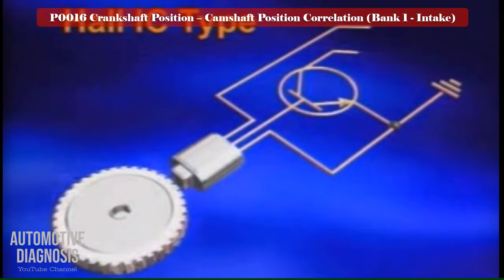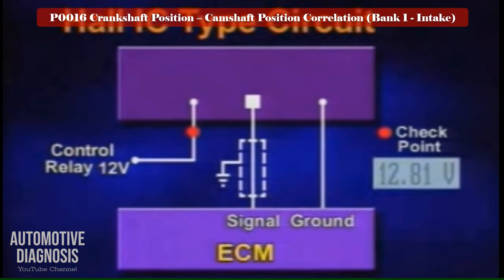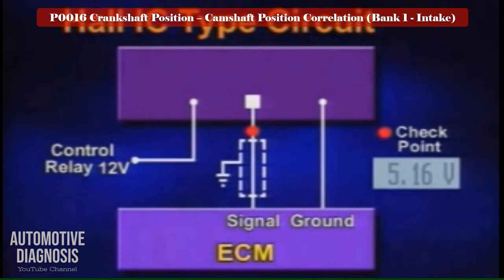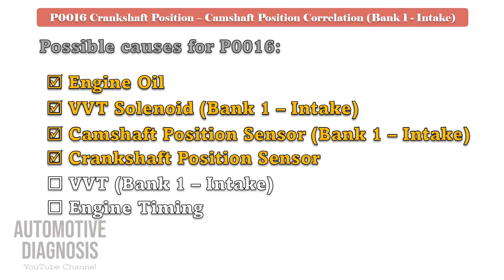If you have the hall IC type, the procedure for testing the sensor is similar to the camshaft position sensor: check the power supply, signal, and ground. If both sensors are good, go to the next step to test the intake VVT.